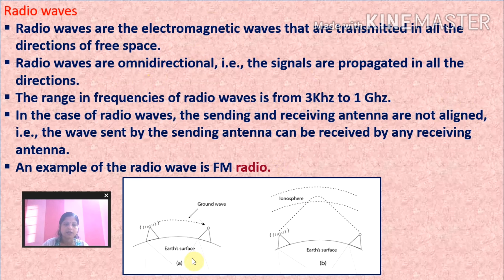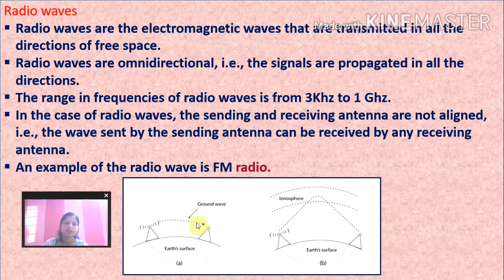Signals are transmitted from ground-based antennas on Earth's surface. FM radio is a common use of radio waves. Radio waves are omnidirectional — signals propagate in all directions — with a frequency range from 3 kHz to 1 GHz.